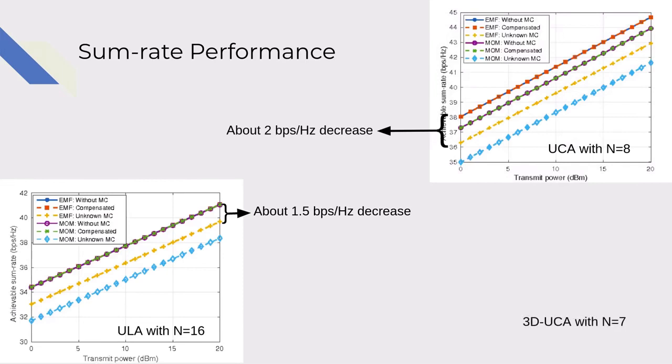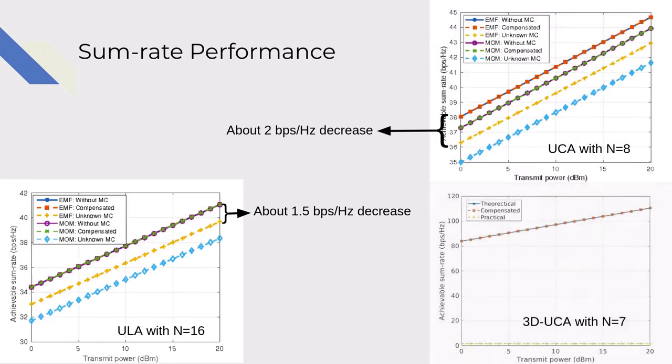In multi-group scenario, due to mutual coupling, inter-group interferences are severe and cannot be mitigated, resulting in significant drop in sum rate value around 1 bit per second per hertz across different transmit power. With compensation, the sum rate has become the same as the theoretical sum rate in all cases.